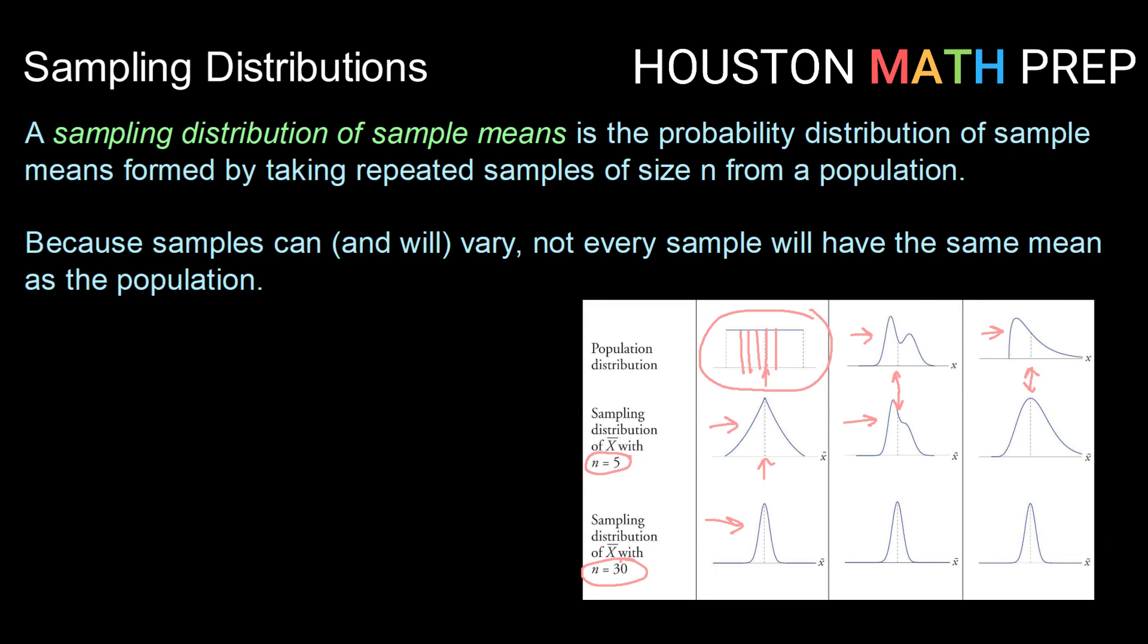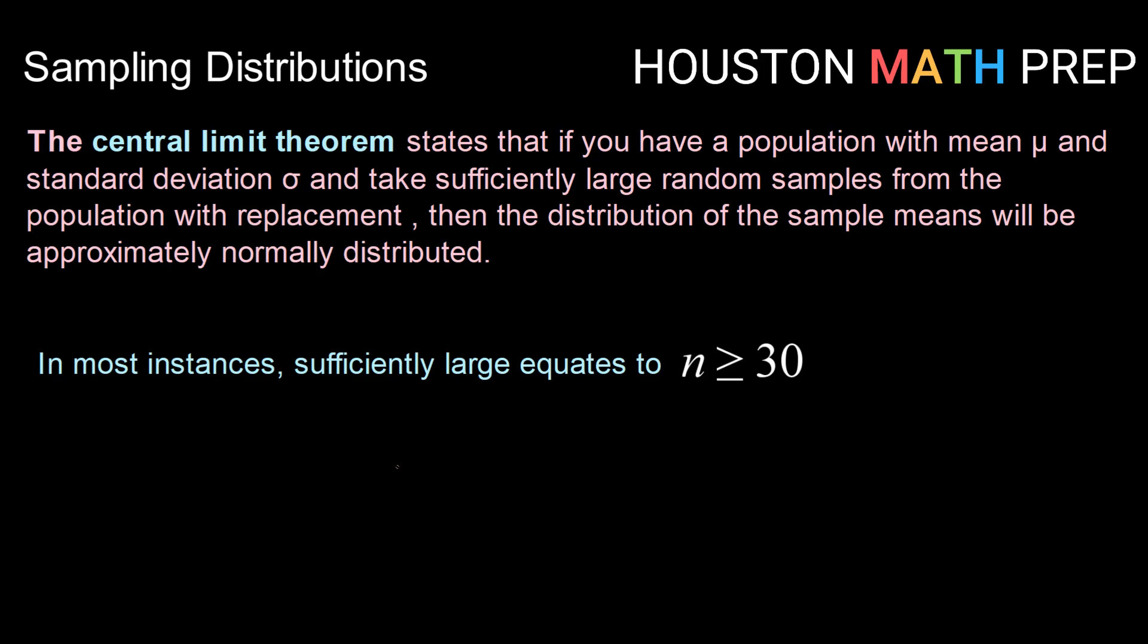So we have a theorem that kind of states all this together, and that is called the central limit theorem. So the central limit theorem states that if you have a population with a mean of μ and a standard deviation of σ, and if you take sufficiently large random samples from the population with replacement, then the distribution of the sample means will become approximately normally distributed. And that's a very powerful statement, because we have all kinds of ways of very easily and efficiently working with normal distributions. We have z-scores, we have functions in our calculator that we can work with, but that's not always true for different distributions. So the fact that we can take any population and take enough samples and then get something to be approximately normal is very powerful.